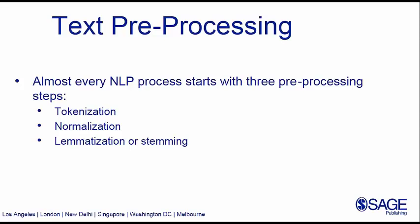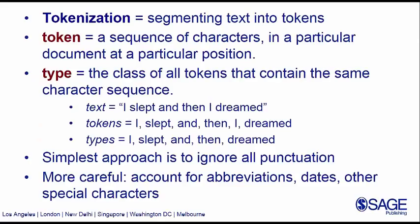For tokenization, this has to do with separating punctuation from the tokens. Tokens are sequences of characters in a particular document, and types are the class of tokens containing the same character sequence. For example, in the text 'I slept and then I dream,' the tokens include all six words, but there are fewer types — 'I' repeats twice so it counts only once as a type. The simplest approach is to ignore everything that's punctuation, sometimes even numbers, but there are more sophisticated ways to handle abbreviations, dates, and special characters.